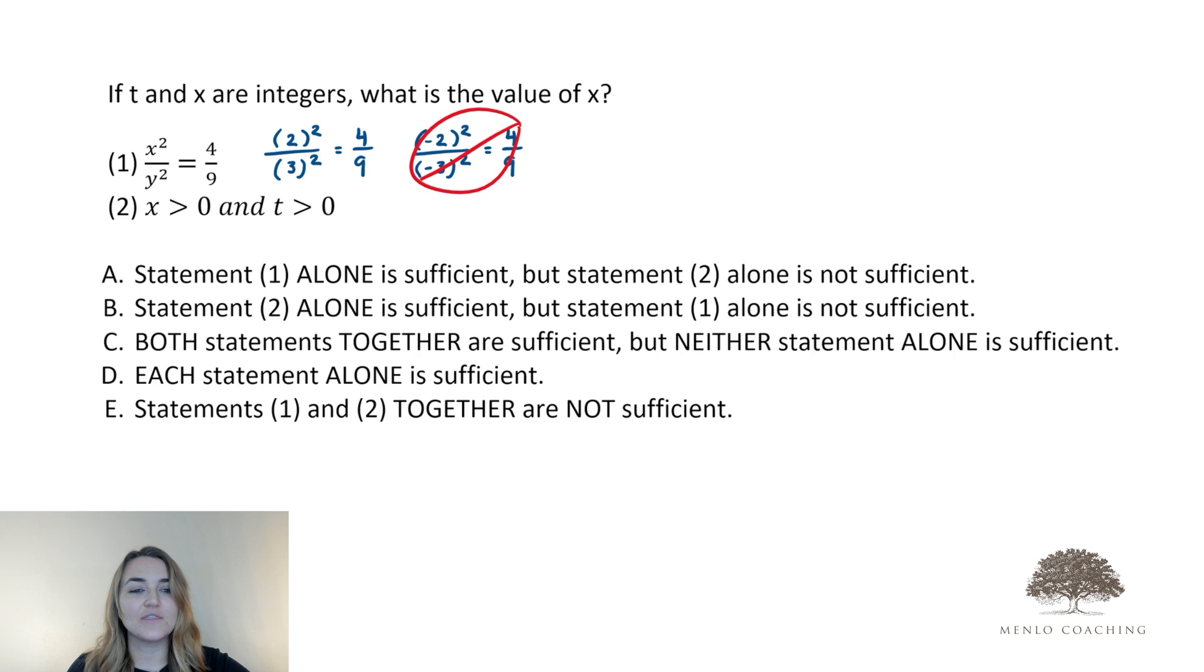I'd argue it's just as important that we recognize the nature of this 4 over 9. This is a fraction, a ratio, a scalable relationship that tells us the relationship of x squared to y squared is 4 to 9. This doesn't inherently tell me x squared is equal to 4 and that y squared is necessarily equal to 9. In fact, we have infinitely many possibilities that will comply with this relationship.